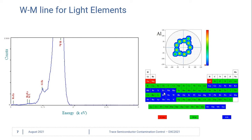Silicon is a large peak and it's always present because it comes from our wafer substrate. In order to get better sensitivity for aluminum and to separate those peaks, we use the tungsten M line to excite the aluminum, but then it does not excite the silicon.